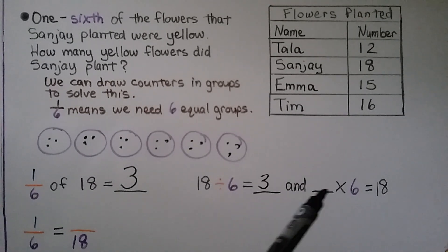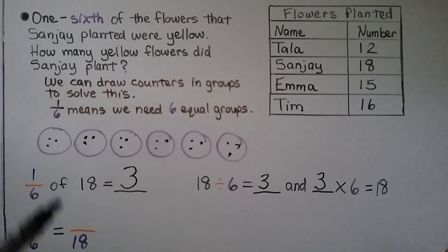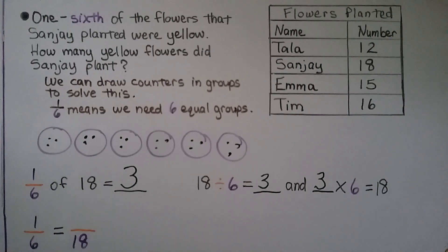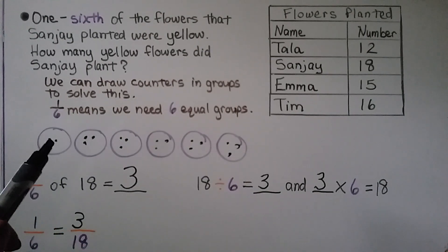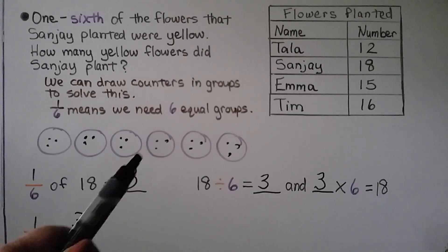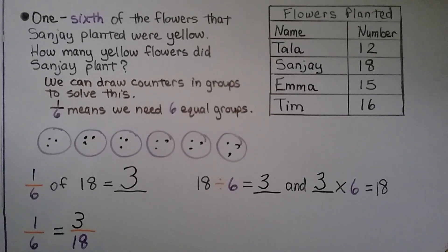We can look at it as division too — eighteen counters divided into six equal groups, there's three in each group. Eighteen divided by six is equal to three, and three times six is equal to eighteen. We can say one sixth is equal to three eighteenths. There's eighteen counters in all and three in each group, so we have three eighteenths in one group. One sixth and three eighteenths are equivalent fractions.